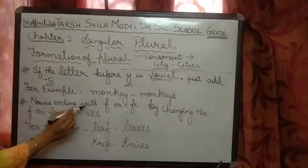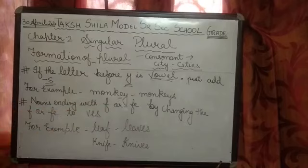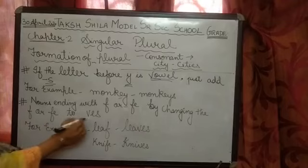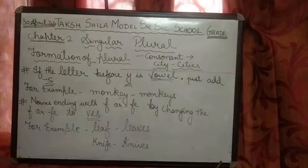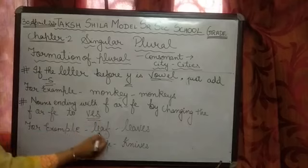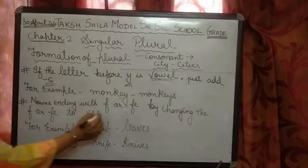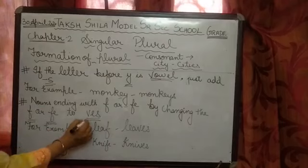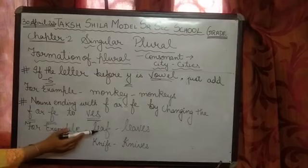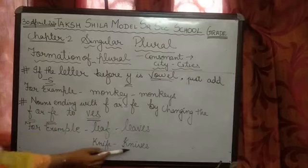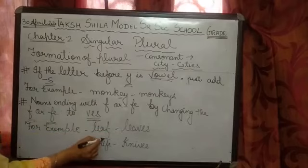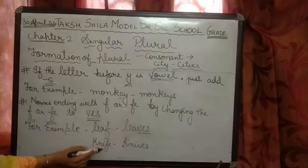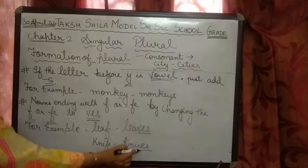Next rule: nouns ending with F or FE change into plural by changing the F or FE to VES. When a word ends with F or FE, we add VES. For example, leaf becomes leaves, knife becomes knives. So in place of F we add VES, and in place of FE we also add VES.